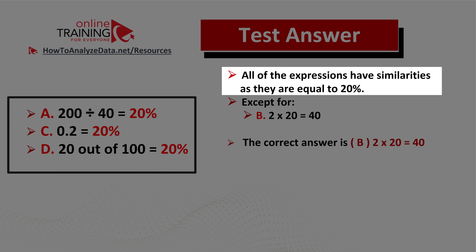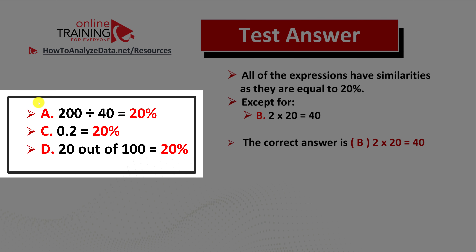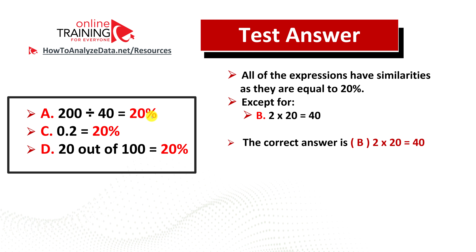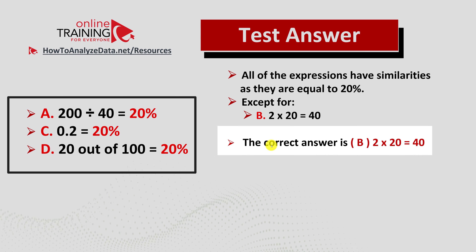All expressions have a similarity — they all equal 20%. Choice A: 40 is 20% of 200. Choice C: 0.2 is already 20%. Choice D: 20 out of 100 is 20%. Except for choice B — 2 multiplied by 20 equals 40, which has nothing to do with 20%. So the correct answer is choice B. Hopefully you've nailed this question and now know how to answer similar problems on the test.